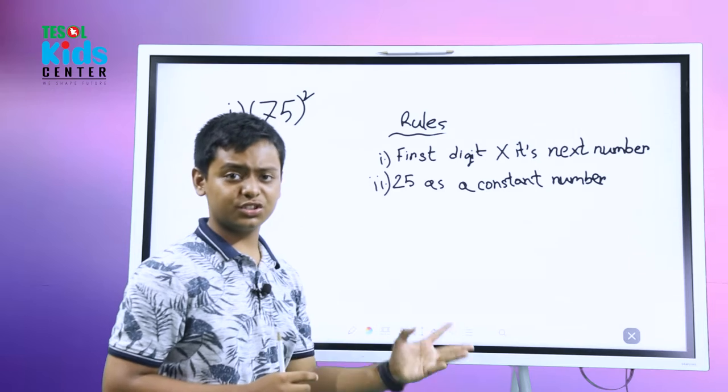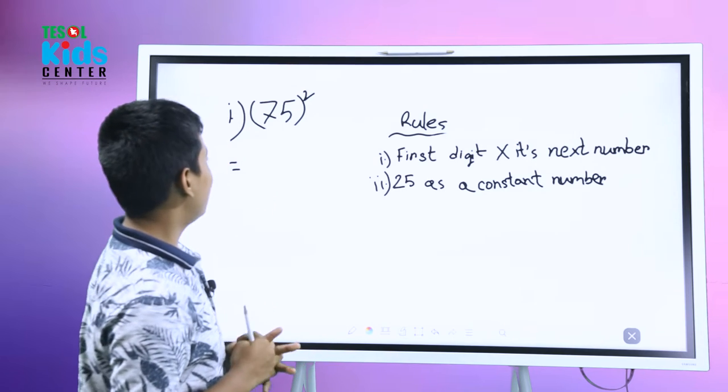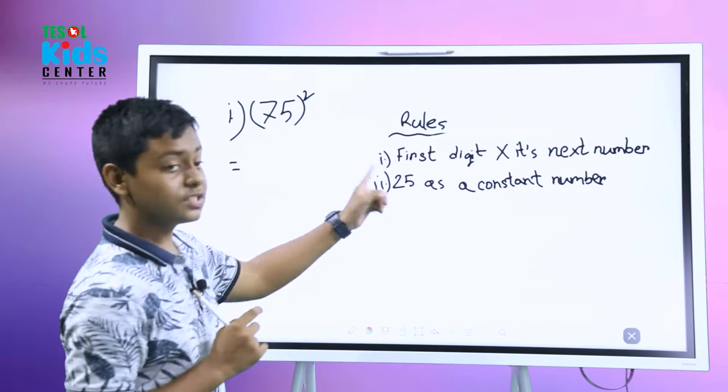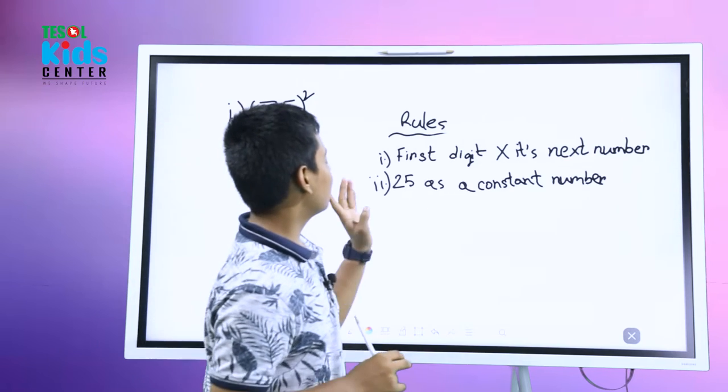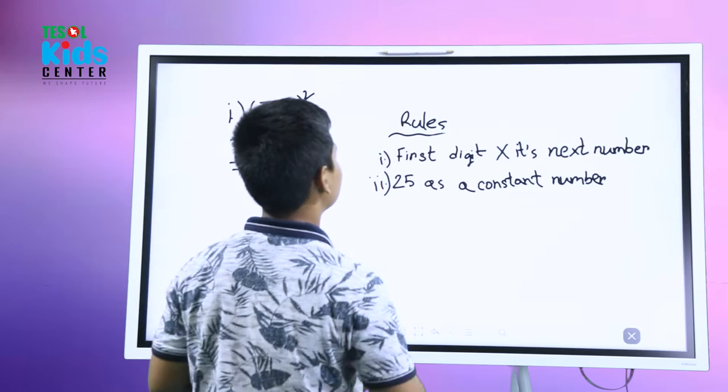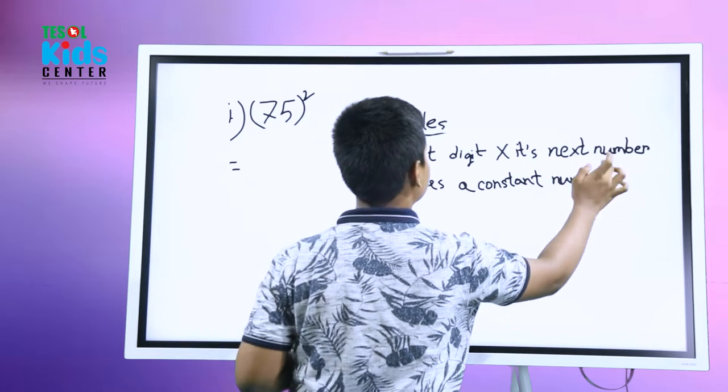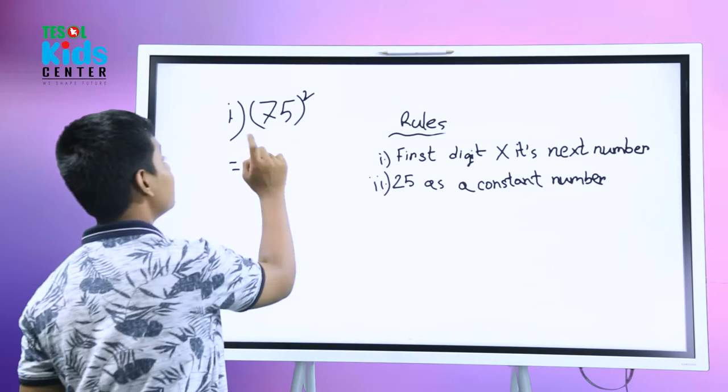Which carries five with the last digit - there's some rules, so we must follow these rules to complete our math. They say that first digit multiplied with its next number. So in this 75, in this number, the first digit is seven. So we're going to multiply this with seven's next number.